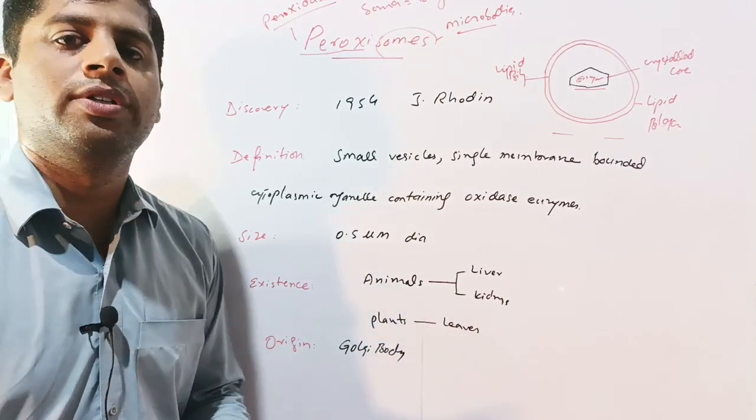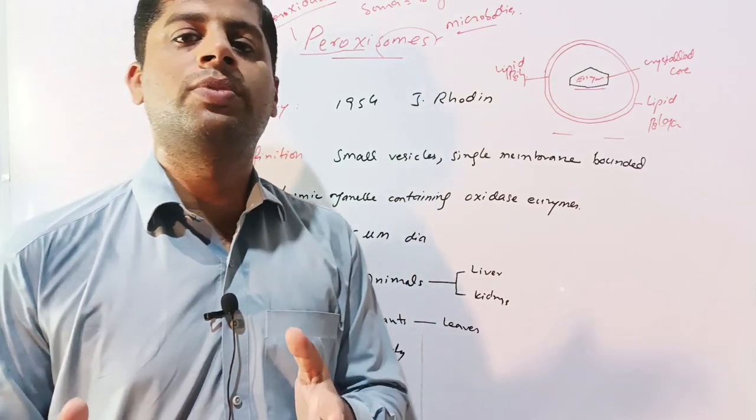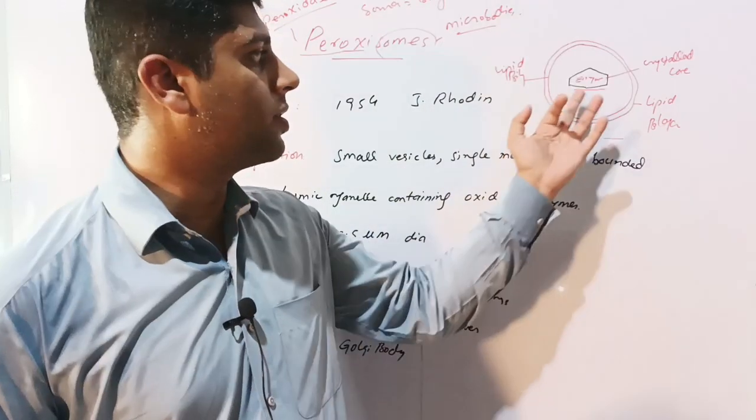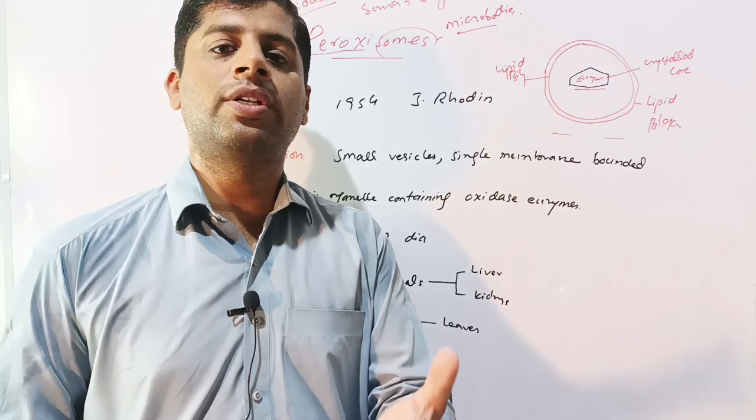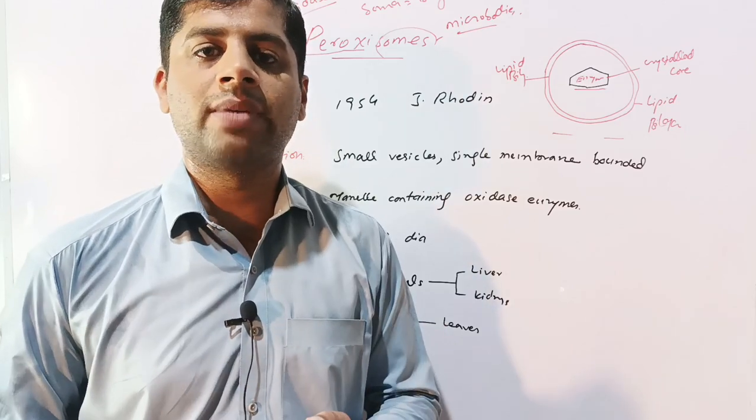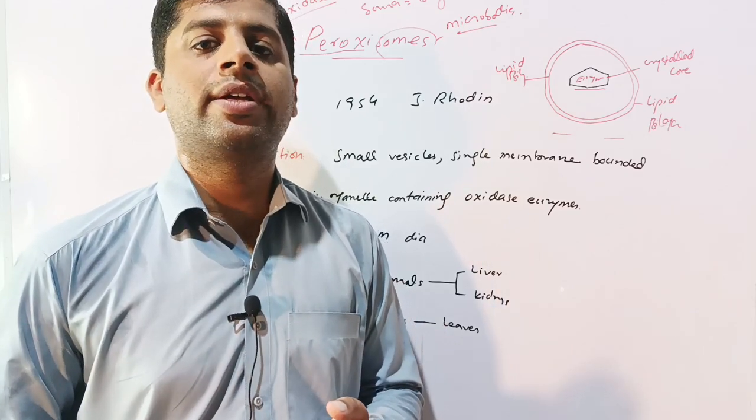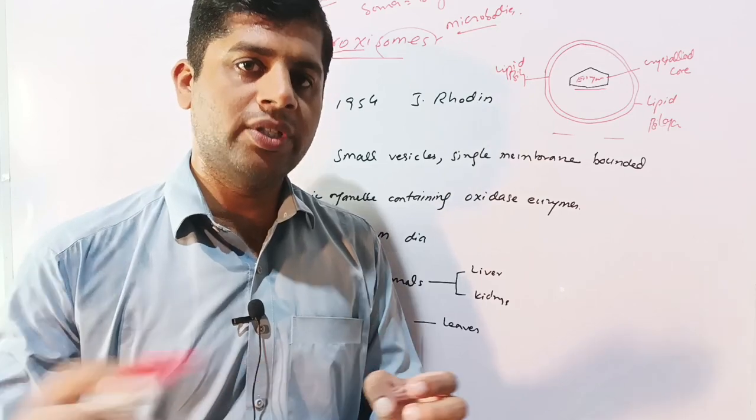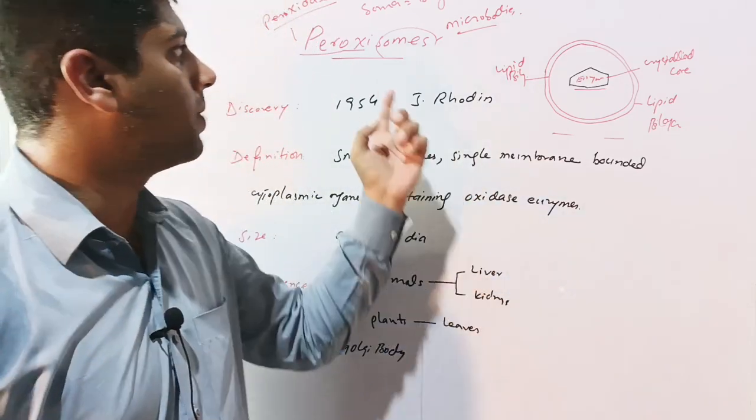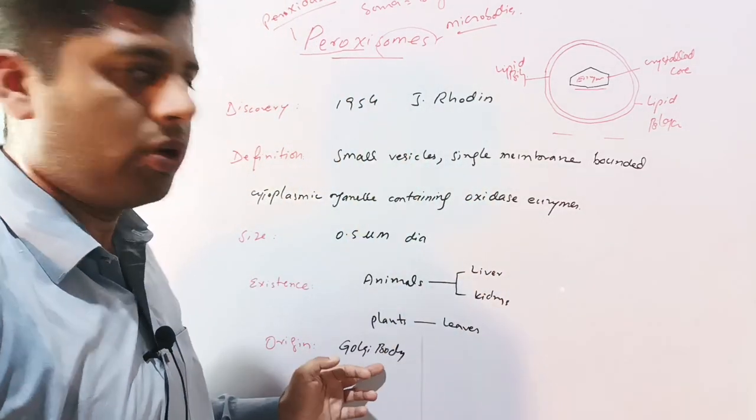These are originated from the Golgi bodies. Basically, the endoplasmic reticulum produces or synthesizes the enzymes, the peroxidases, and the Golgi bodies package and store these enzymes in the form of vesicles. When these vesicles bud off the Golgi bodies, they give rise to peroxisomes.